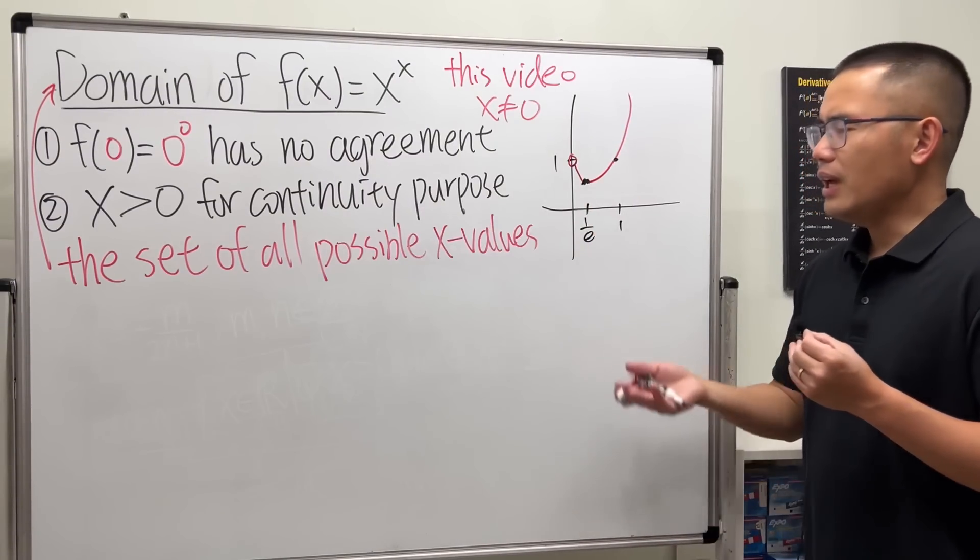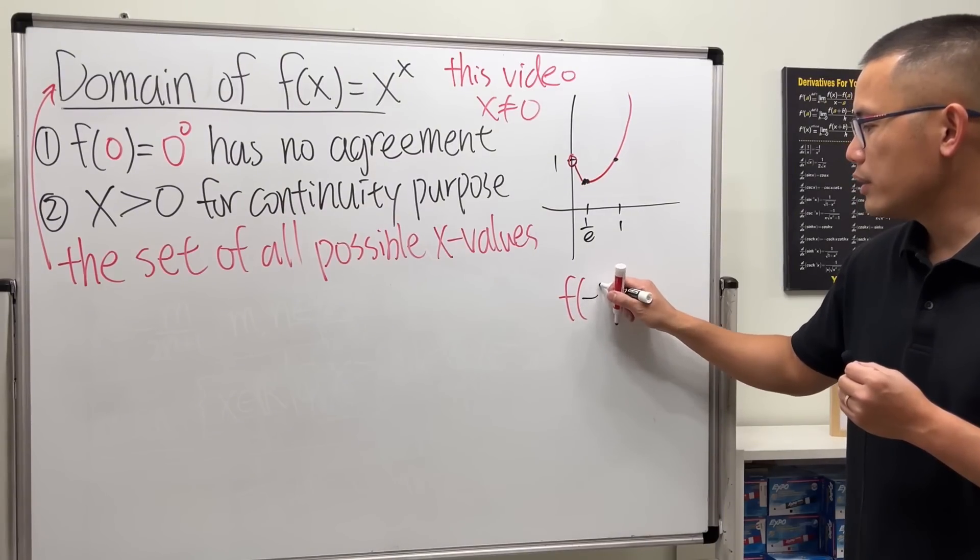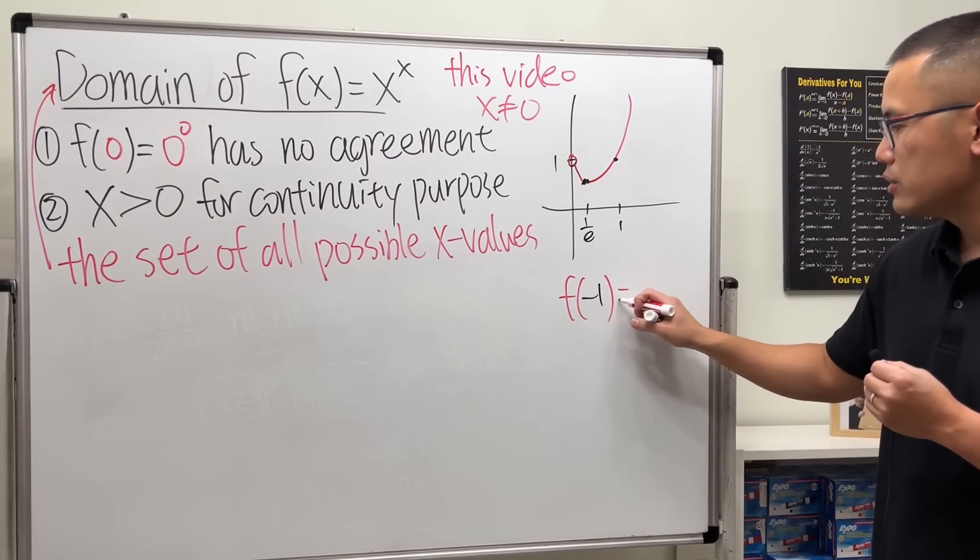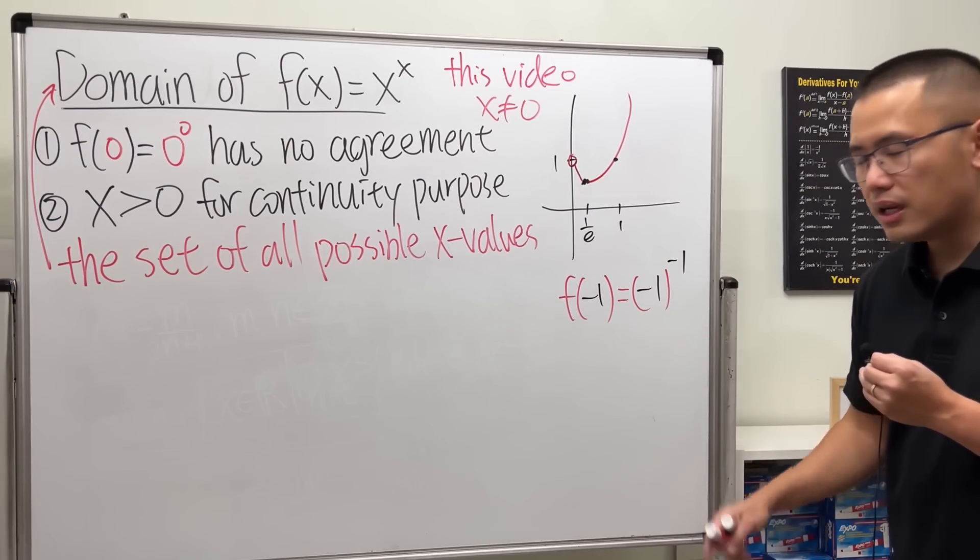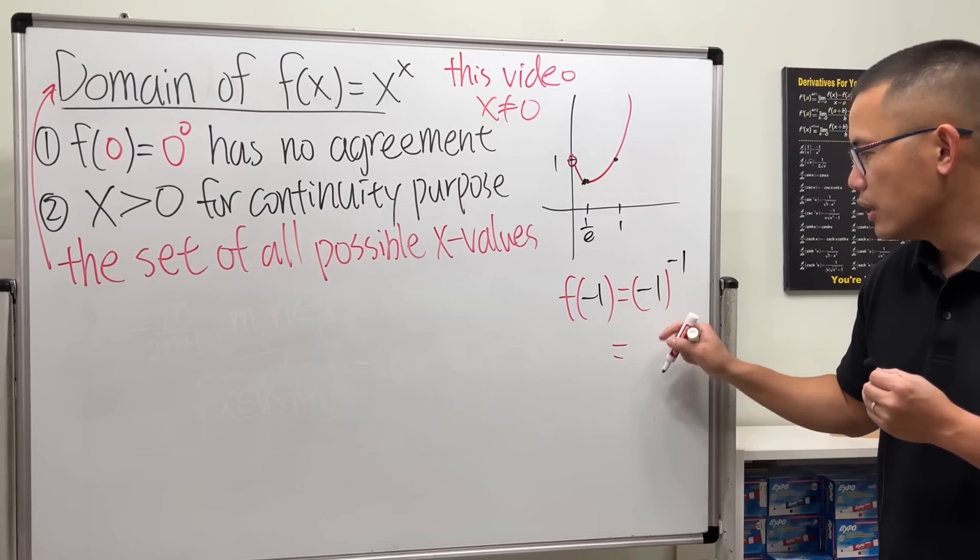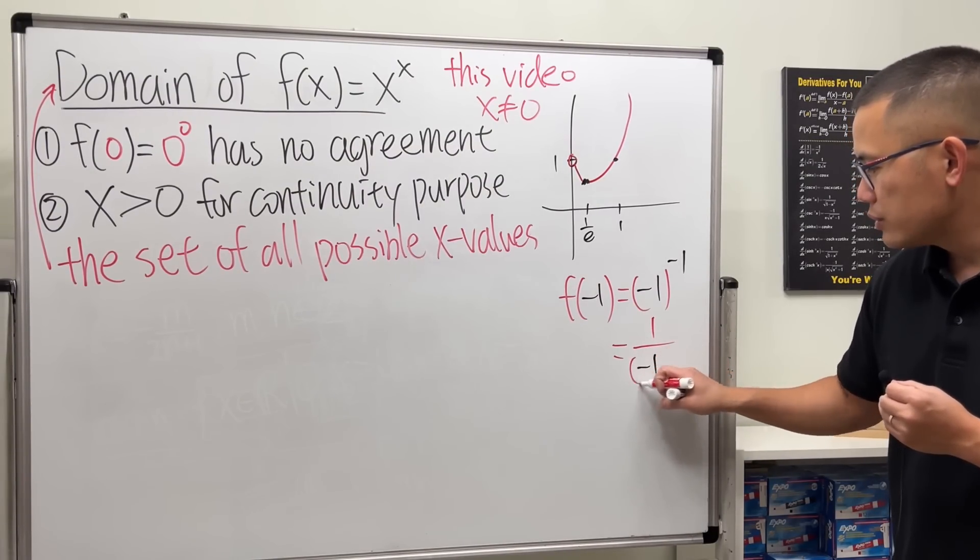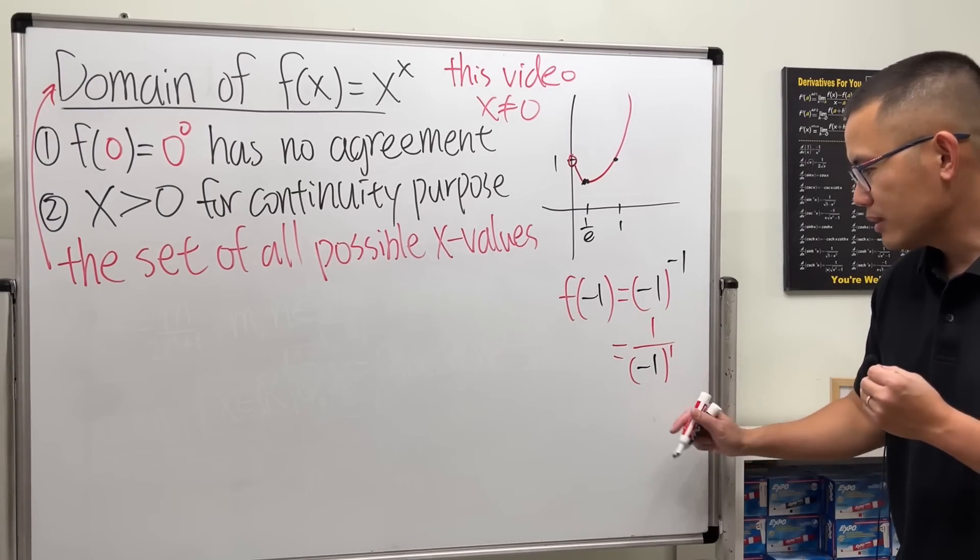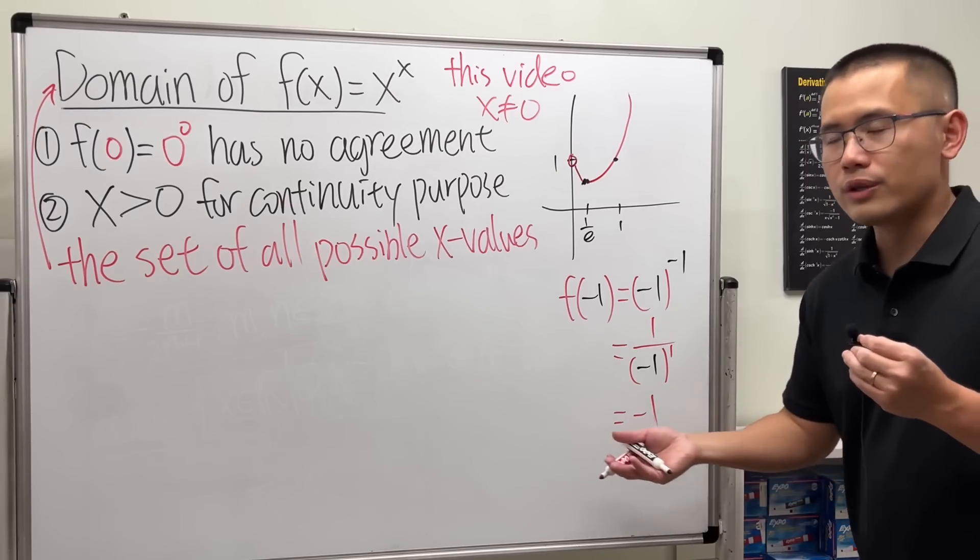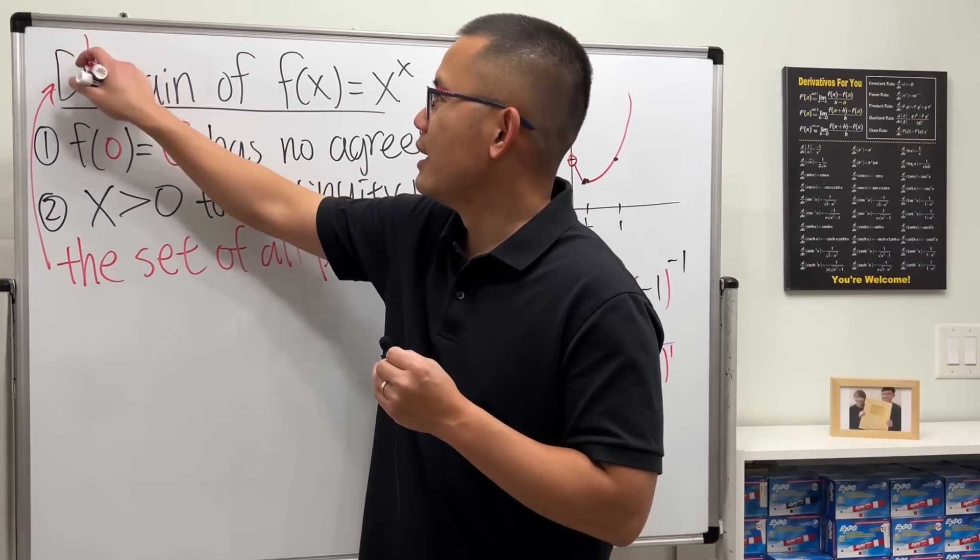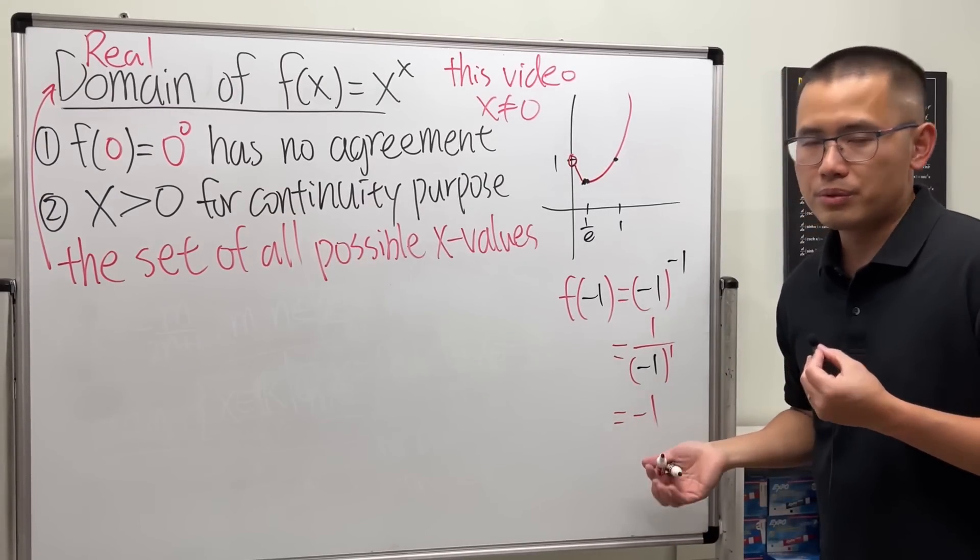Can we have negative numbers? Yes. For example, if I put -1 into x, this equals (-1)^(-1). The negative power tells you to bring this to the denominator and raise to the positive first power. If you work this out, this is totally legit—you end up with -1. Of course, I should mention that we're trying to find the real domain, real numbers, so we're good.